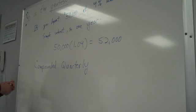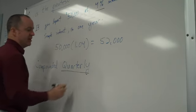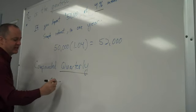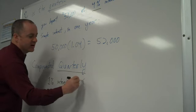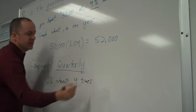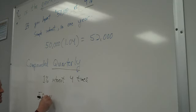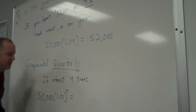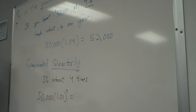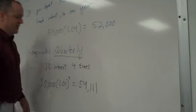So what this means is if you have 4% interest compounded quarterly, you're going to get 1% interest four times. Times 1.01, and I need to do this four times, so why not just raise that to the fourth power? So put that... 54,111.